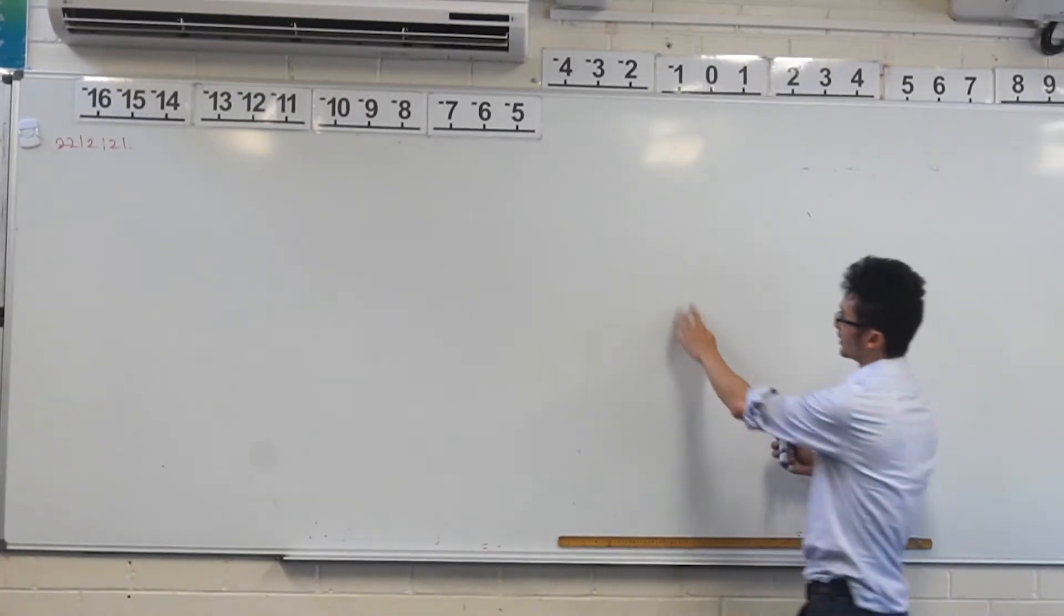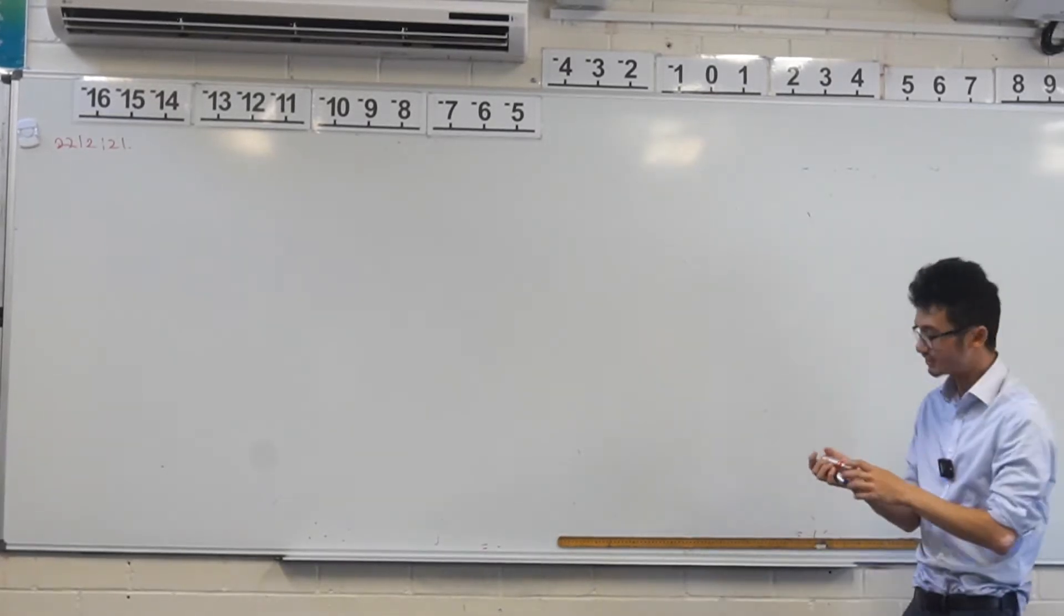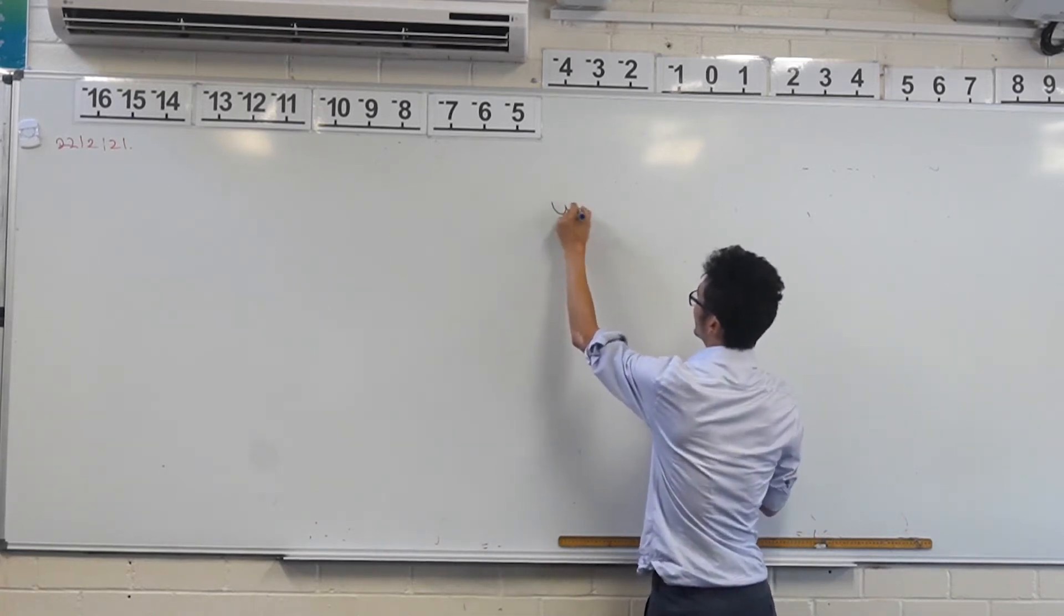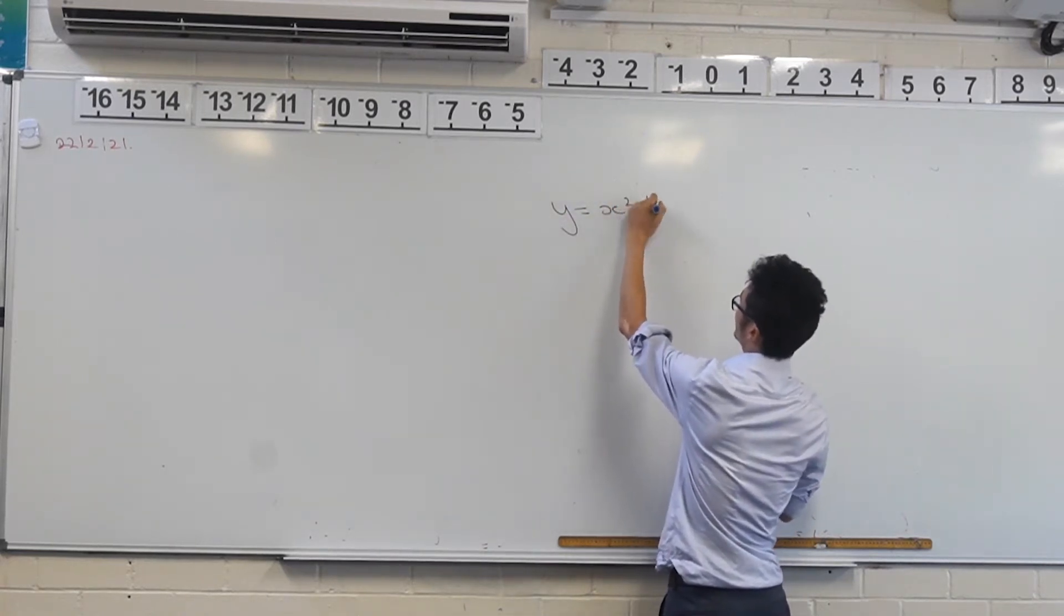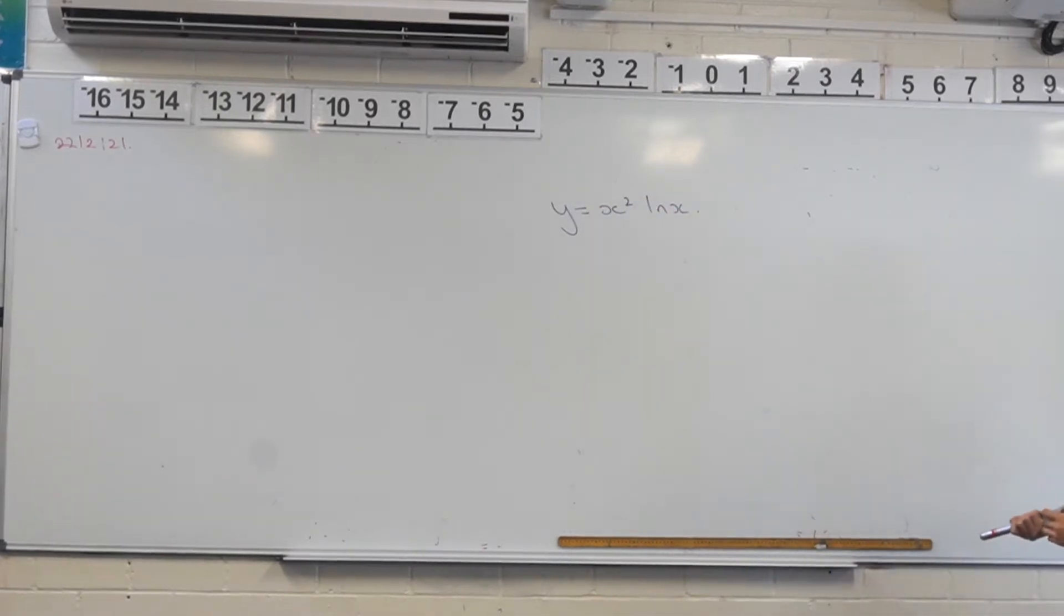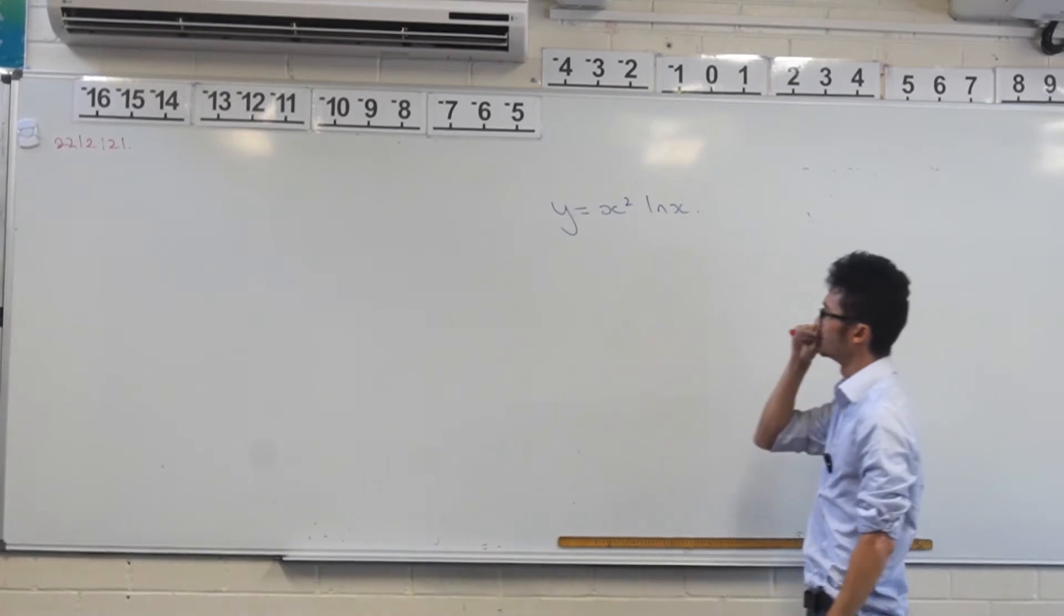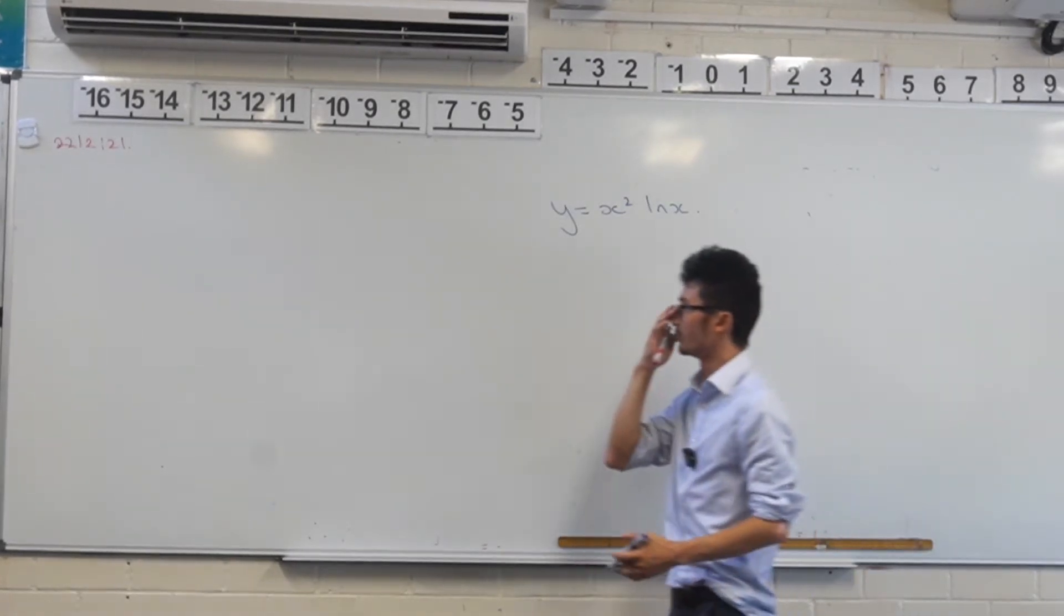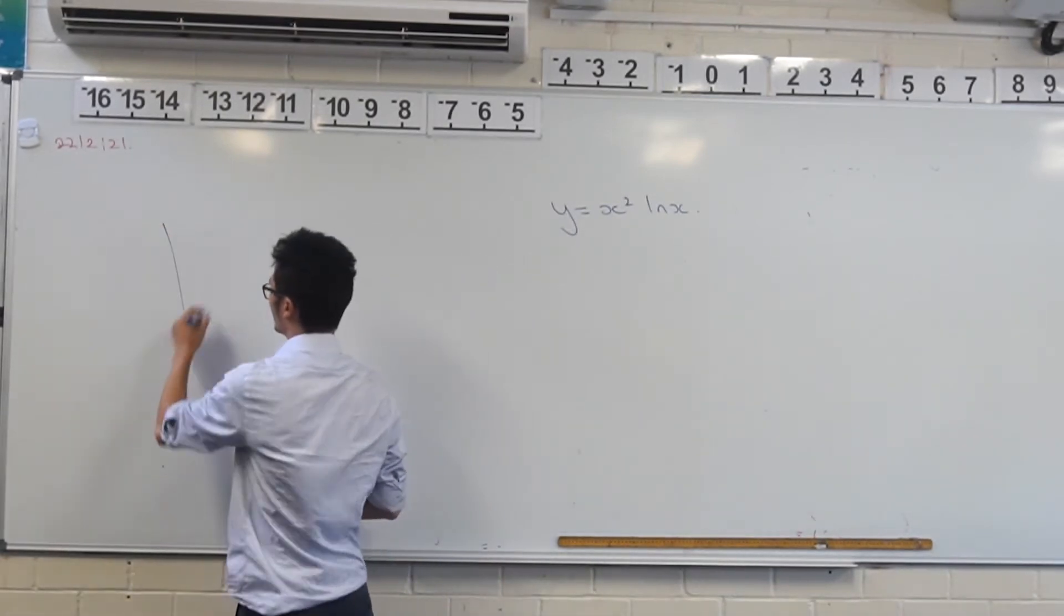Alright, so let's have a look at some kind of more advanced curve sketching skills. Let's say we have this equation or function, y equals x squared times ln x. The way that we can think about this is, first of all, what do each of these individually look like? Because it's going to be influenced by what they look like.